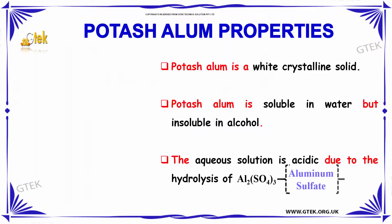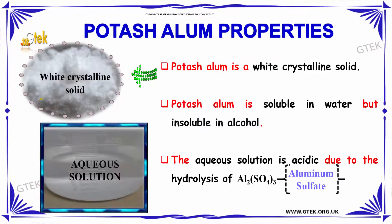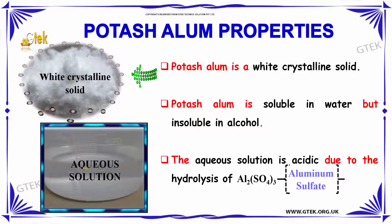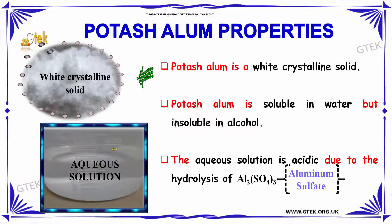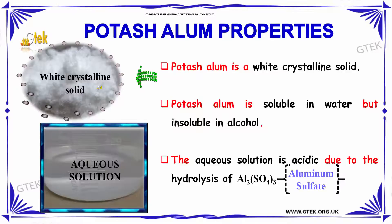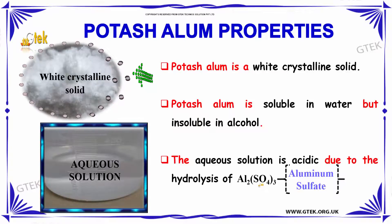Potash Alum is a white crystalline solid. Potash Alum is soluble in water but insoluble in alcohol. The aqueous solution is acidic due to the hydrolysis of Aluminium Sulphate.